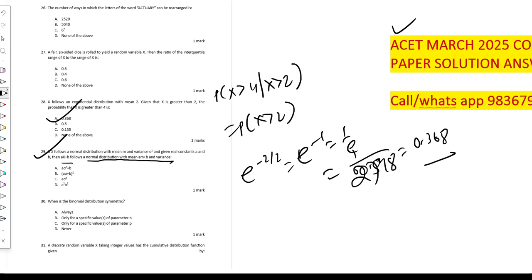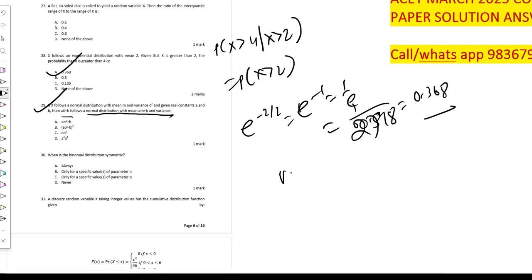So variance has a formula. For ax plus b, it is irrespective of anything, this will go out. a square into variance of x and variance of b is zero, so this is like a square.